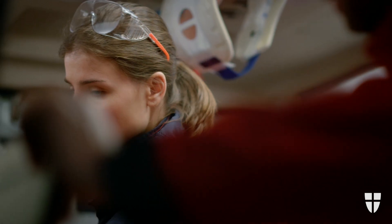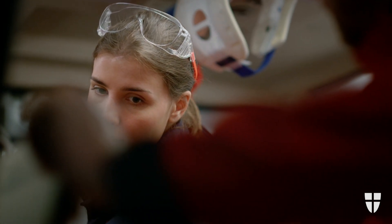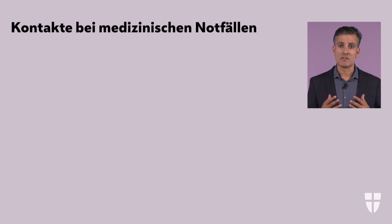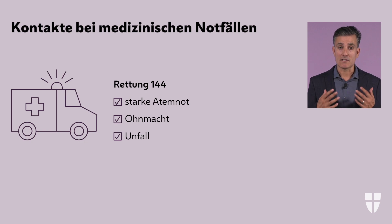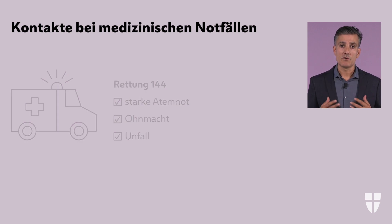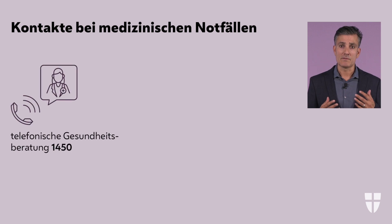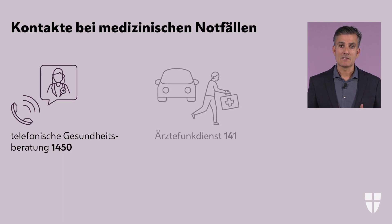Here are the most important contacts in case of emergency. You should call Emergency Services by dialing 144 if a person has severe shortness of breath, has fainted, or had an accident. For general health questions, you can call the Telephone Health Advice Service at 1450. The Erste Funkdienst, the Physicians Radio Service 141, substitutes for general practitioners at night or on weekends.